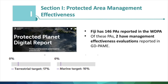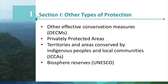In Fiji, as of November 2020, the country has 146 protected areas reported to the WDPA. Of these, two protected areas have management effectiveness evaluations reported in the global database on PAIM. When looking at other types of protection presented in the country data dossiers, we examine other effective conservation measures, OECMs, as available from the IUCN and other sources. We also pull in data on privately protected areas, as well as territories and areas conserved by indigenous peoples and local communities, ICCAs.